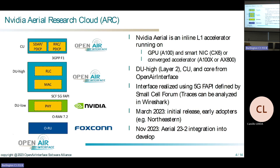The integration of the NVIDIA Layer 1 Accelerator is a project I've been working on a lot. It is a combination of a Mellanox ConnectX network card and an NVIDIA A100 GPU that together form an inline Layer 1 Accelerator. The physical layer runs entirely on the GPU, the fronthaul is handled by the network card, and it also works on their converged accelerators such as the A100X or AX800.